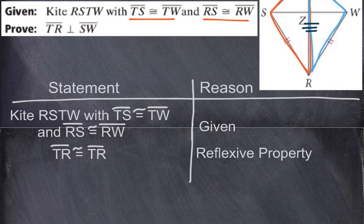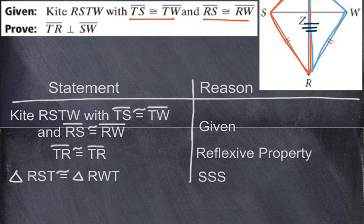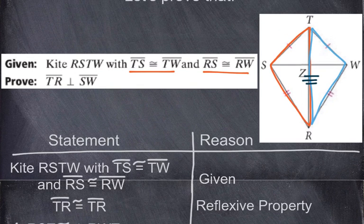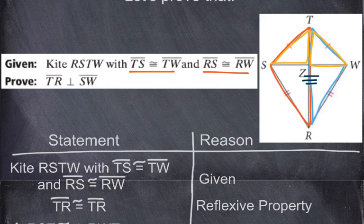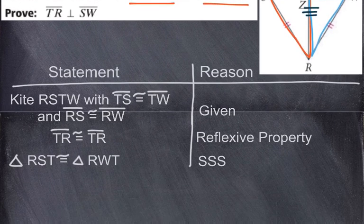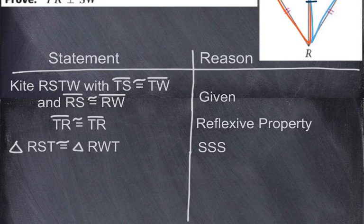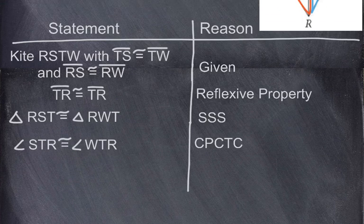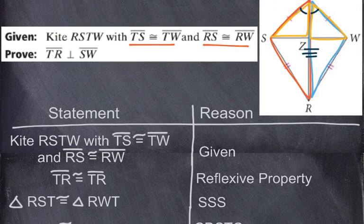Now that triangles RST and RWT are congruent, we can work down to the two top triangles. Both of those larger triangles share the angles at T. Using CPCTC, angle STR is congruent to angle WTR — corresponding parts of congruent triangles are congruent. Those two angles being congruent will help us with the next step.